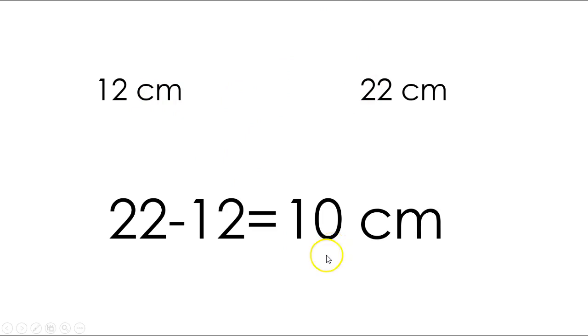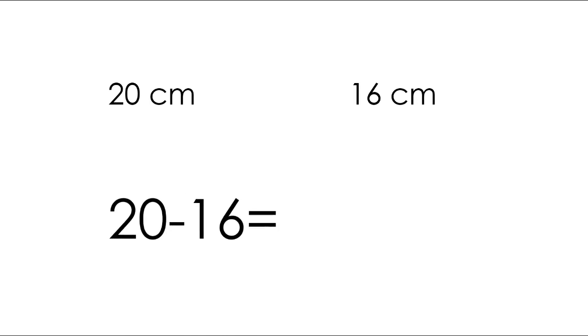Now we have 20 centimeters and 16 centimeters. Go ahead and circle which one is longer. I hope you circled 20 centimeters because that is the longer one — good job! Now we need to find the difference. Are we adding or subtracting? We're subtracting to find the difference. So go ahead and write down your number sentence. Did you write down 20 minus 16? I hope you did, because that is our number sentence.